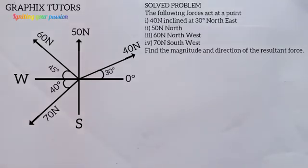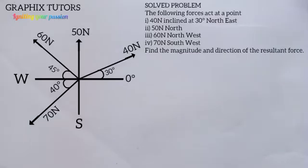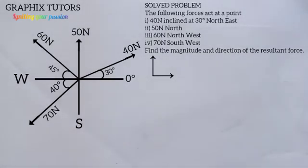Before we can find the magnitude, we need to resolve all the forces. Some forces — the 40 N, the 60 N, and the 70 N — are all inclined forces and must be resolved into components. For the 40 Newton force inclined at 30 degrees north east, the horizontal component is 40 cos 30 and the vertical component is 40 sin 30.